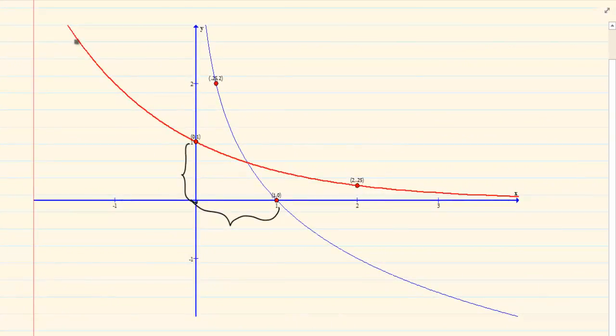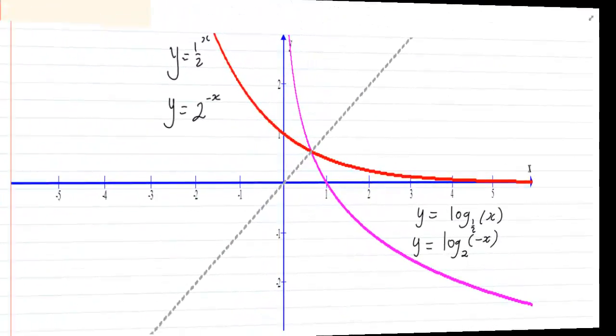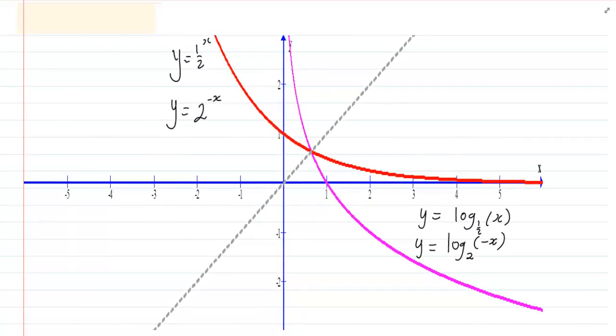If you take this graph. Look at this graph. This one here was y is equal to half to the power of x. And if you look at this one, it is also y is equal to half to the power of x. So, the different scales make it look different. But they are exactly the same graphs.